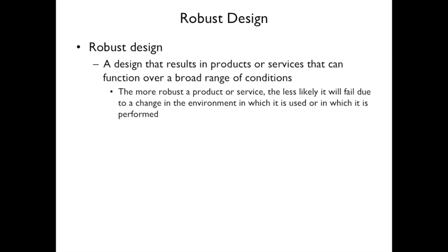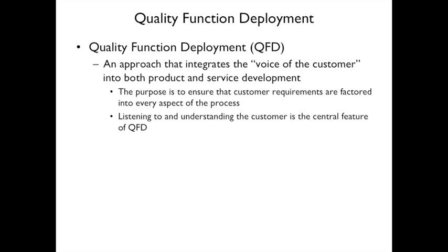Robust design means designing a product to operate under a broad range of conditions. For example, an older phone could not be submerged in water, but a robust phone might be waterproof. A robust watch might be able to survive being dropped. The product has a wider range of operating conditions.